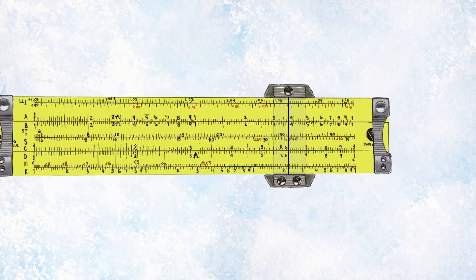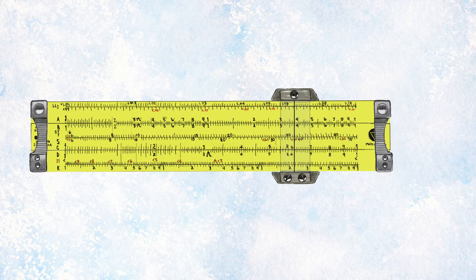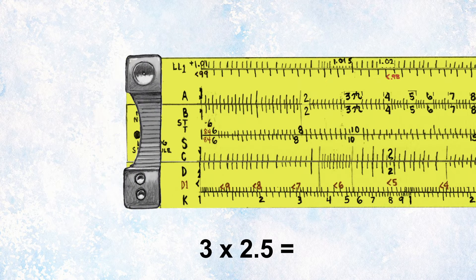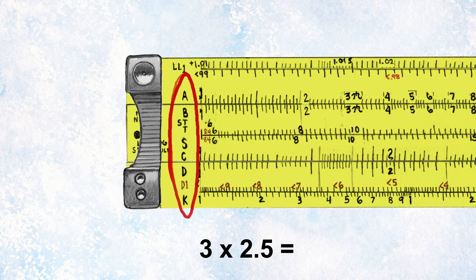So let's say we wanted to do a simple math problem like what's three times two and a half. First you look on the left hand side of the slide rule, you'll see scales.